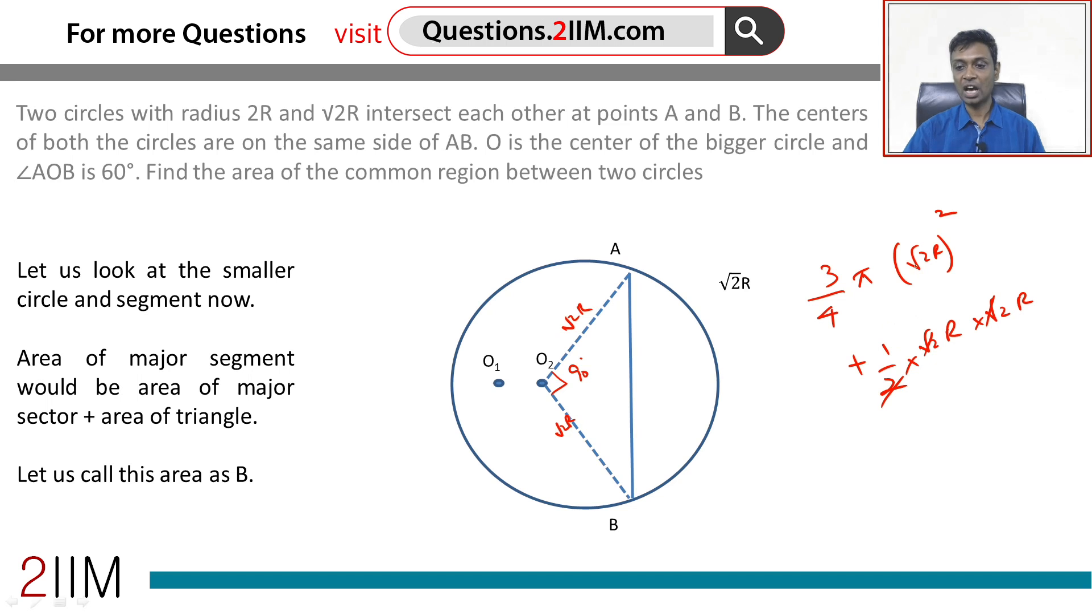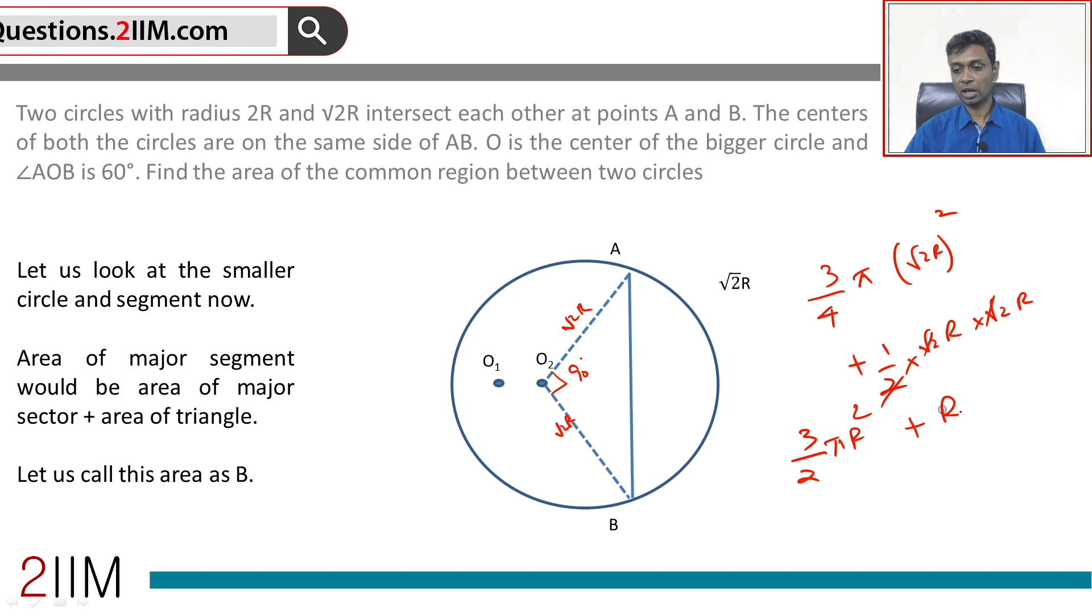These two get knocked off, we have an R square here, which becomes 2 by 2 R square, we have 3 by 2 pi R square plus R square.